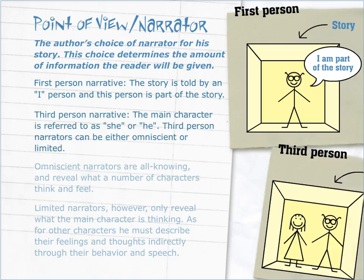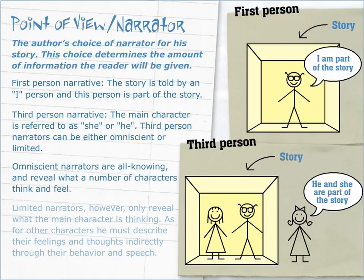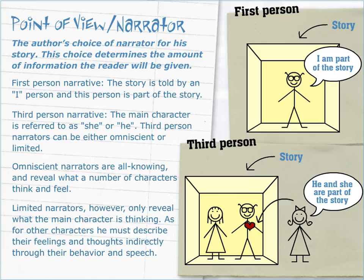In third person narrative, the main character is referred to as she or he. Third person narrators can be either omniscient or limited. Omniscient narrators are all-knowing and reveal what a number of characters think and feel. Limited narrators, however, only reveal what the main character is thinking. As for other characters, the narrator must describe their feelings and thoughts indirectly through their behaviour and speech.